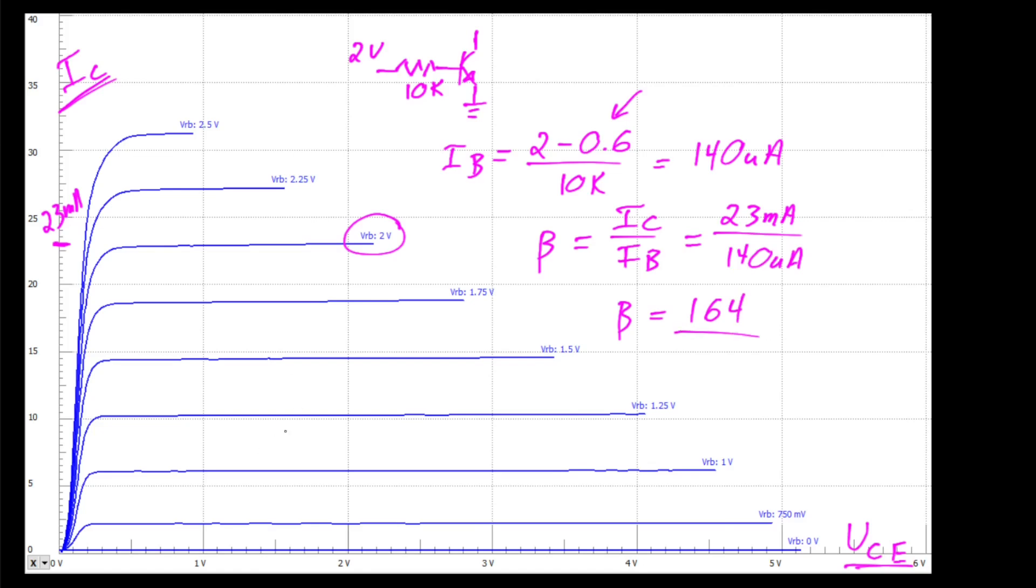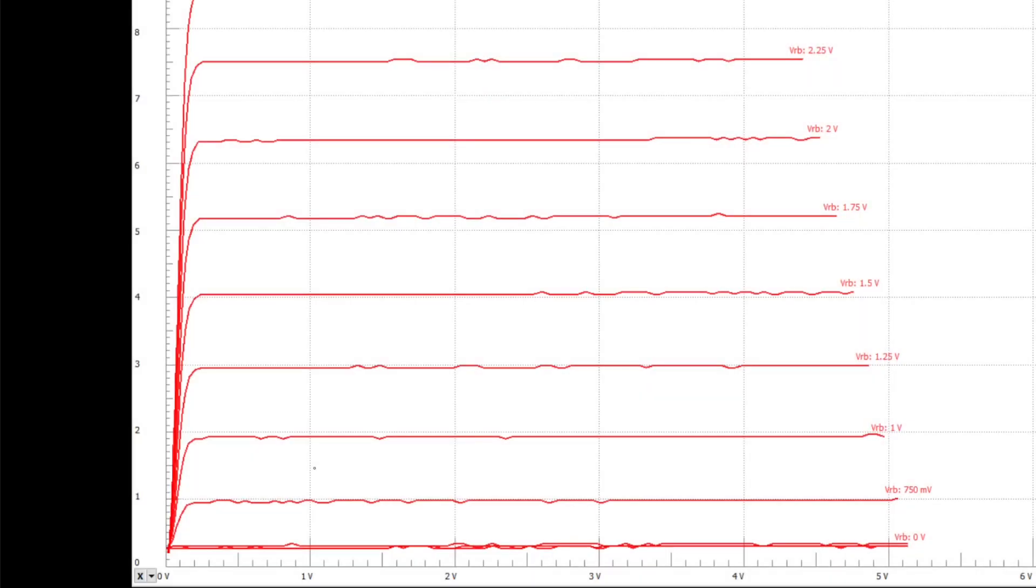By the way, I should mention that this is a type MPSA 06 transistor, which is a small signal transistor in a TO92 type case. We can perform similar calculations for a type TIP41 transistor.